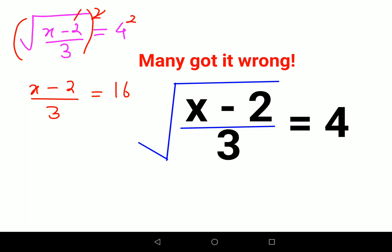Now next step, we need to get rid of this 3 first, so we will multiply both sides by 3. This and this will get cancelled, so I am left with x minus 2 equals to 48.